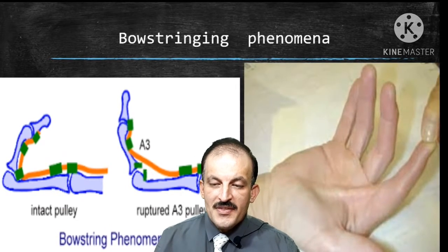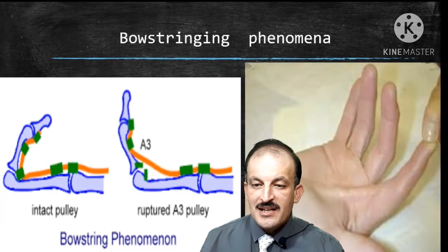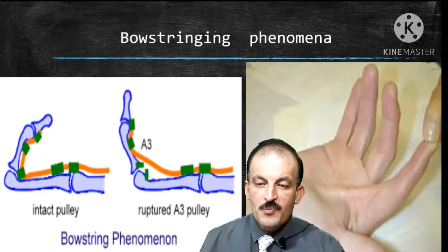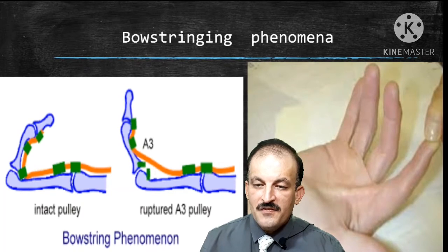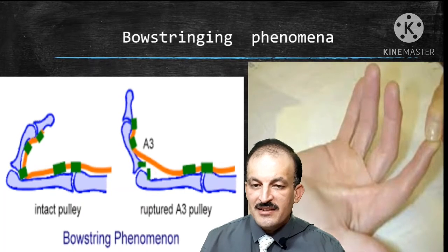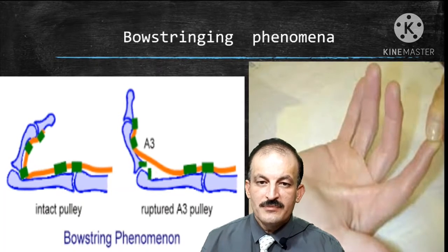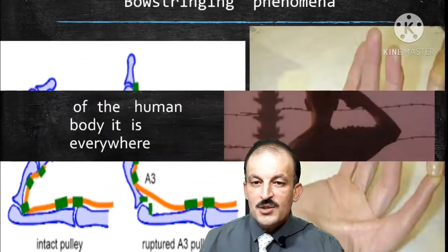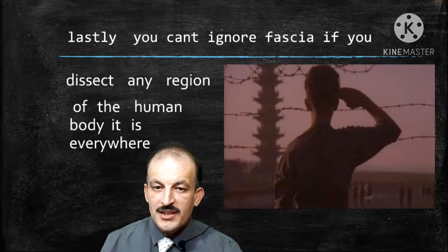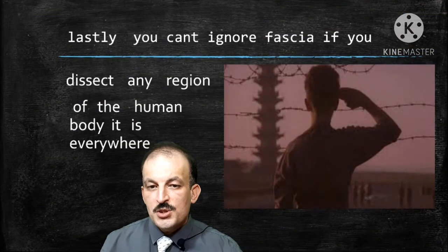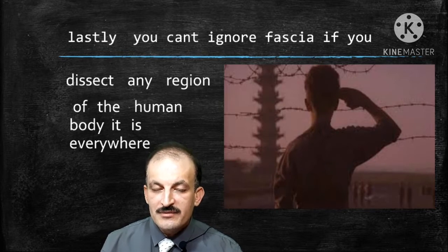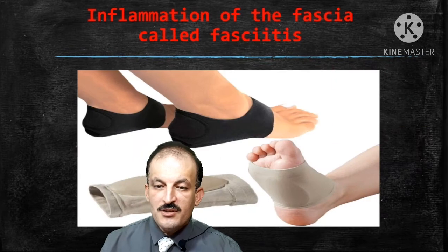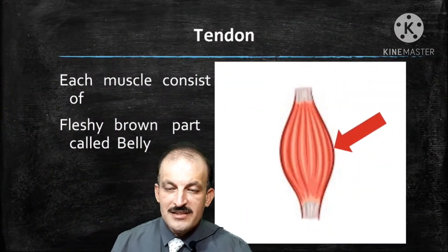In this figure, there is a rupture of the pulley that fixes the tendon in its position. Lastly, you can't ignore fascia — if you dissect any region of the human body, it is present everywhere. Inflammation of the fascia is called fasciitis.